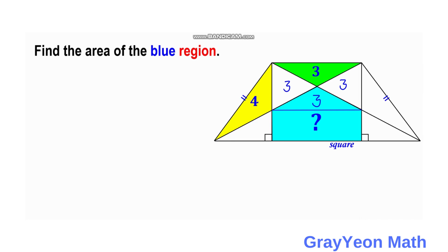If we focus on this triangle — which is comprised of this yellow region, this white region, and this green region — the base is actually this side of the square; let's call this s. And the height is also this side of the square, which is s. So this is also equal to s.